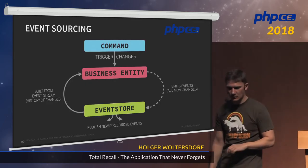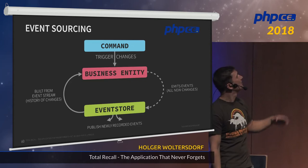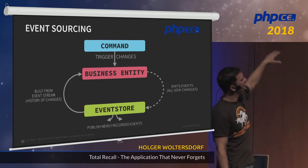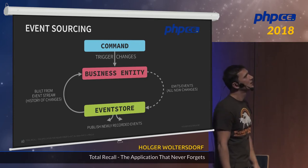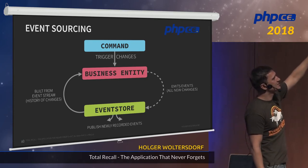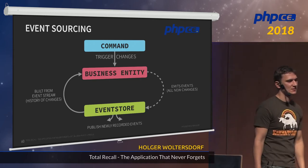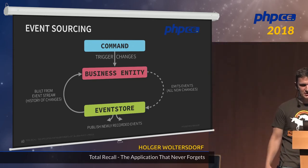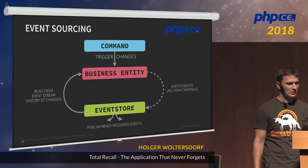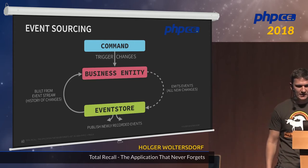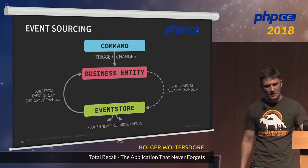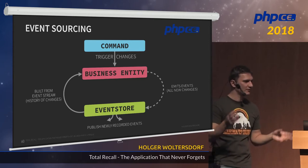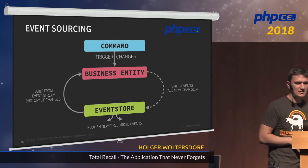In detail: we have a command that triggers a change in the business entity. The business entity was loaded from an event stream, all new changes emit new events, those are stored in the event store, and the event store publishes them to everyone that is interested. We don't have a relational database anymore — no repositories or records.